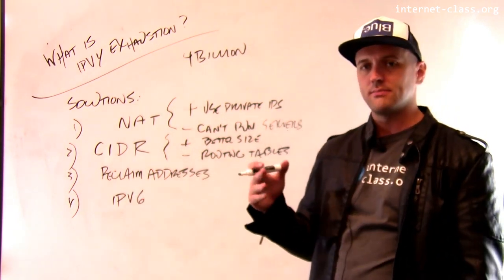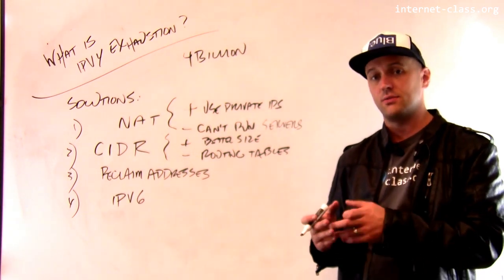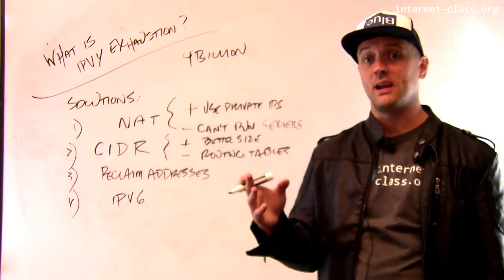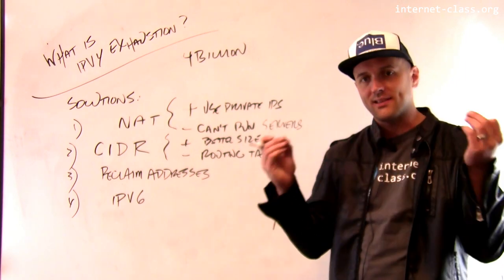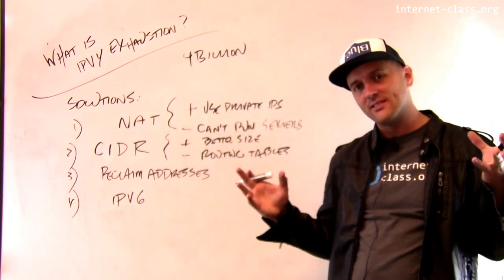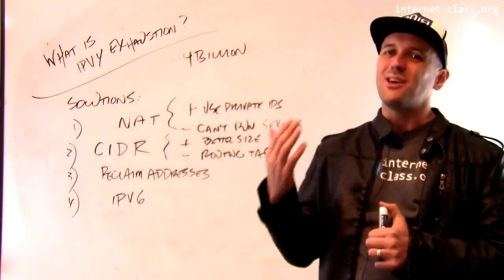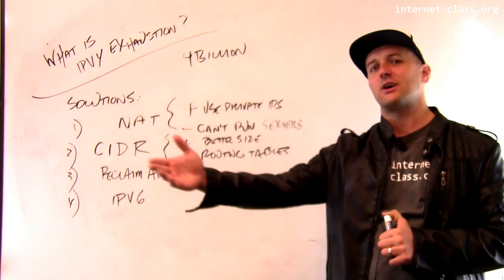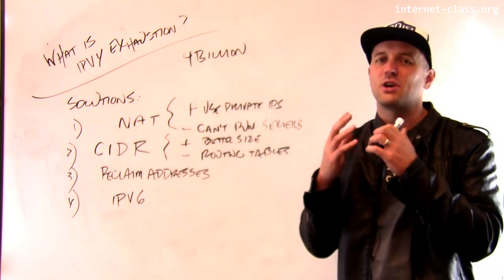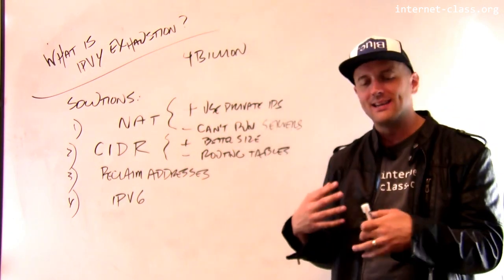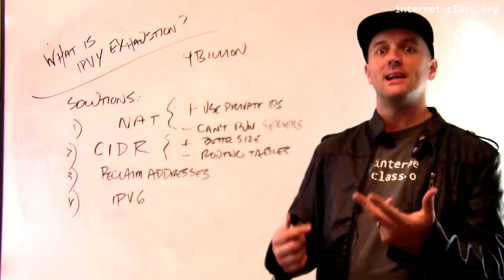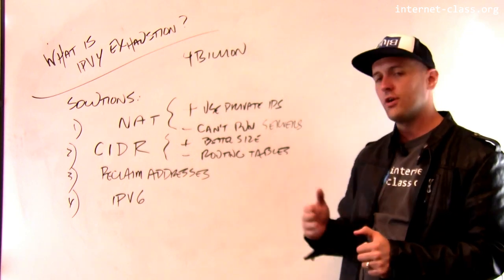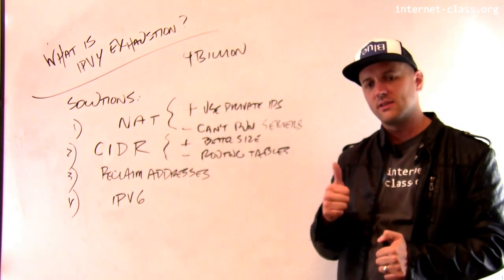One thing that the internet committee on names and numbers has been trying to do also with some success is actually reclaim blocks of IP addresses that weren't allocated very well in the beginning. Particularly approaching entities that receive these Class A networks with 16 million IP addresses and kind of being like, we could kind of use those for something else. You have more IP addresses than like whole countries in Africa. This doesn't seem like a good thing. So can we have some of those back? And to some degree that works, but you're sort of relying on them to acquiesce because they were given these and there's some sort of agreement that's binding. And so there's no requirement that they give those IP addresses back, but if we can do this, this helps.